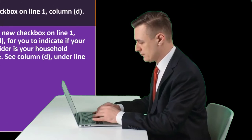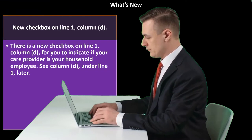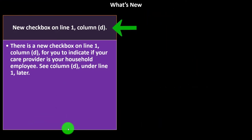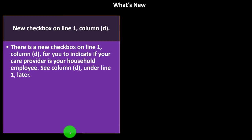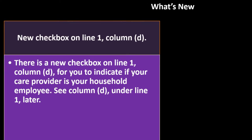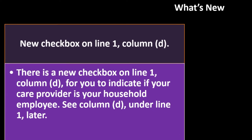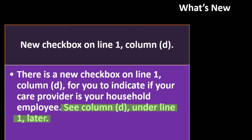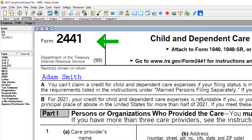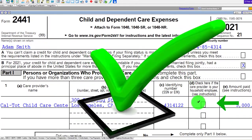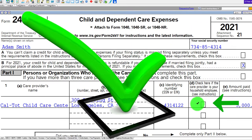If this kind of FSA plan is available through your employer, read up and ask questions to make sure you understand it. There is a new checkbox on line 1, column D, for you to indicate if your care provider is your household employee. On the form, you can see column D with the checkbox: check here if your care provider is your household employee.